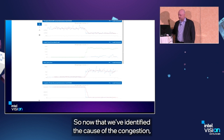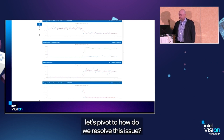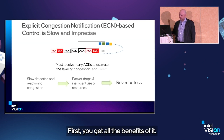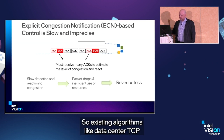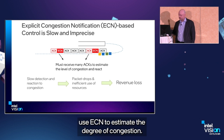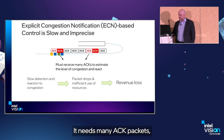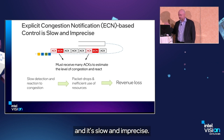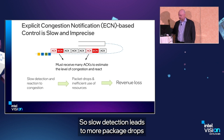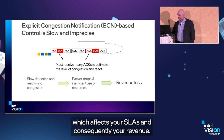Now that we've identified the cause of the congestion, let's look at how to resolve it. Existing algorithms like Data Center TCP use ECN to estimate the degree of congestion — they need many ACK packets, each delivering one or zero information, making them slow and imprecise. Slow detection leads to more packet drops, which affects your SLAs and consequently your revenue.